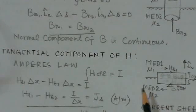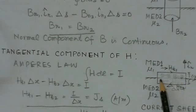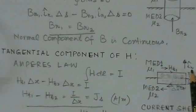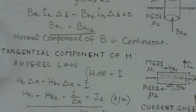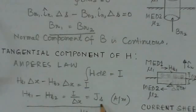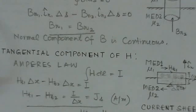Now let us see the tangential component of H, the magnetic field. We make a rectangle halfway between the boundary and apply Ampere's law: Ht1·ΔX minus Ht2·ΔX equals the enclosed current I. Since delta Y tends to zero, this gives Ht1 minus Ht2 equals the surface current density Js in Amperes per meter. If there is no surface current density, then Ht1 equals Ht2.